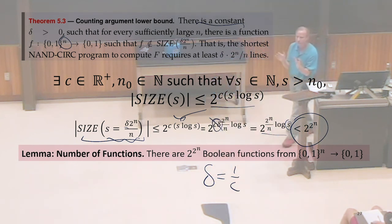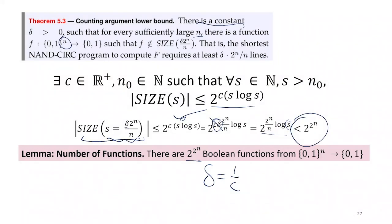If the count of the number of functions that can be implemented by an S-line program is less than the number of functions there are for sufficiently large N, right? And the sufficiently large N is N is greater than N0, which is picked from the big O. We have this property that there must be some functions that cannot be implemented by those circuits.